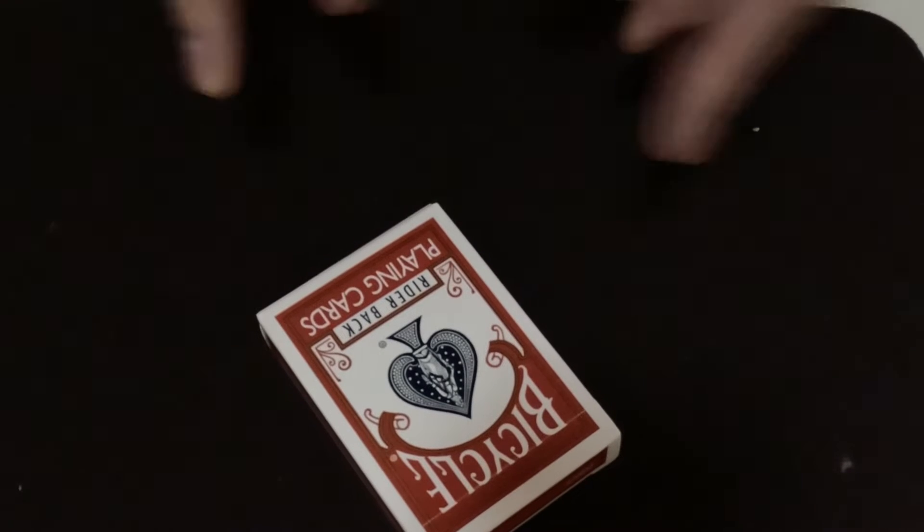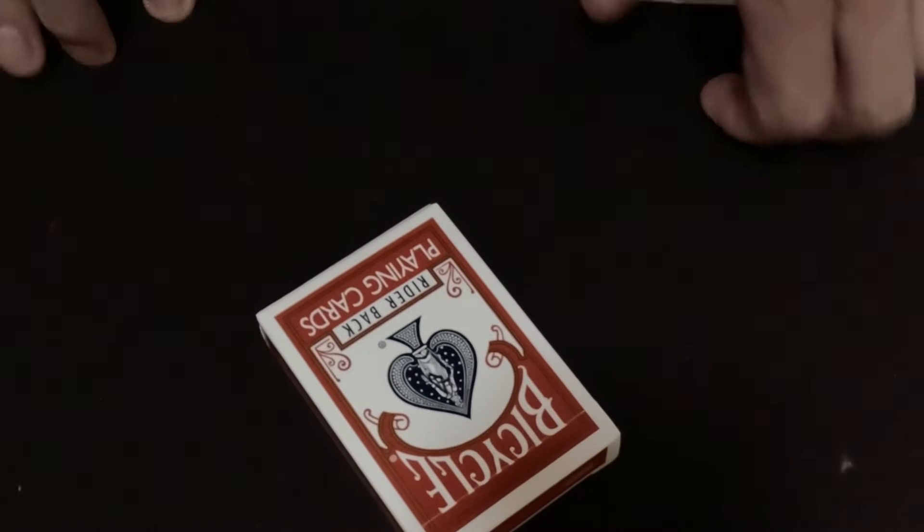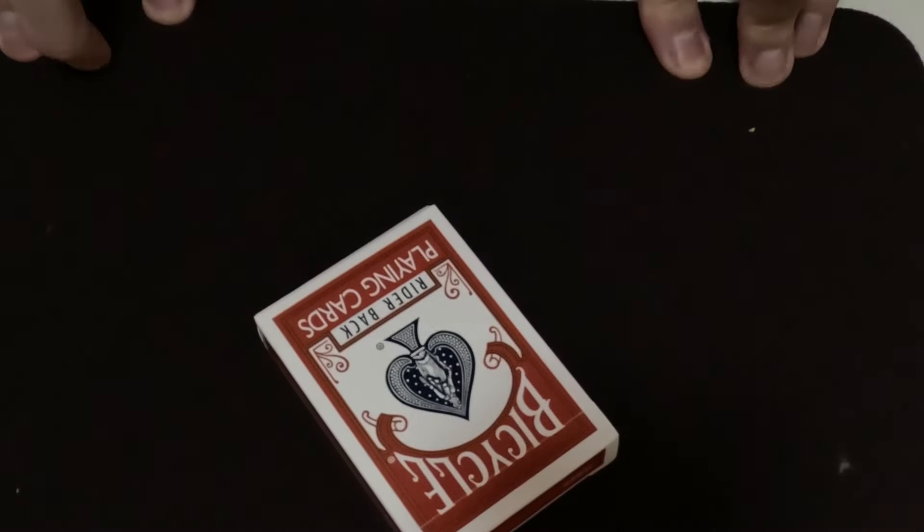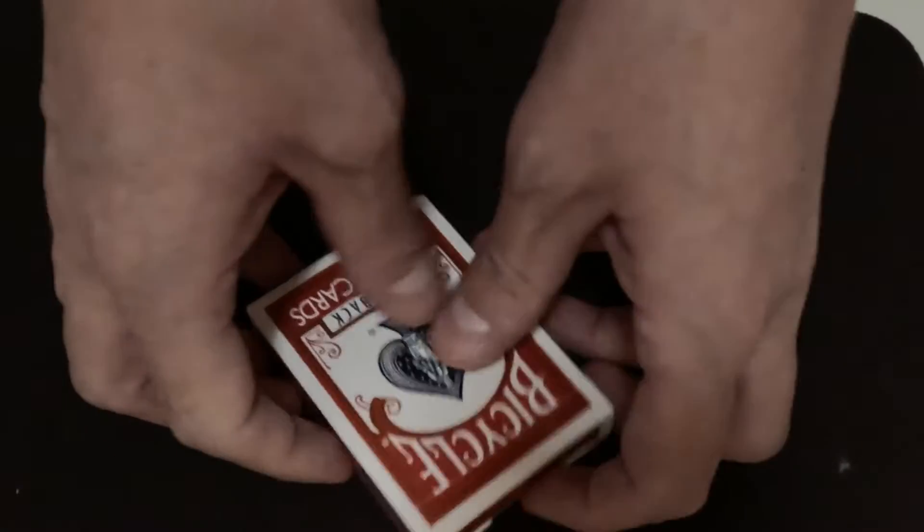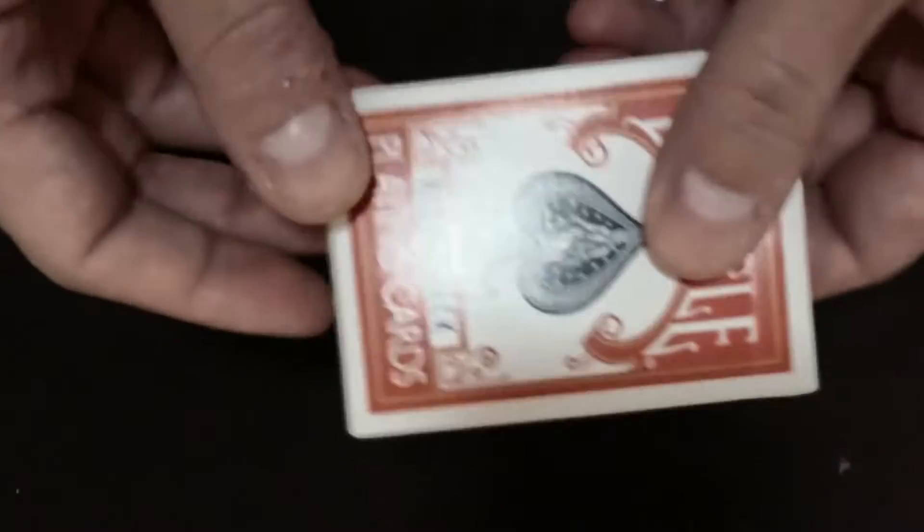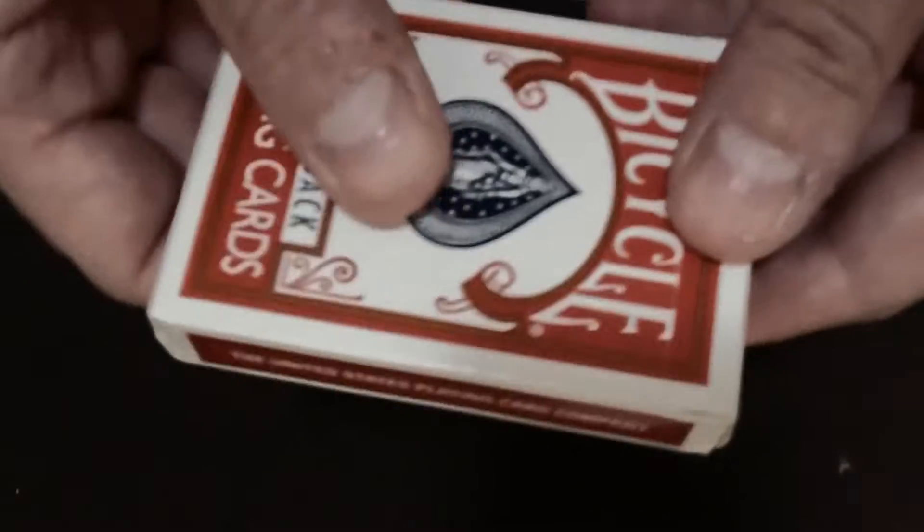For the purposes of this demonstration, we're just going to pretend there's an audience member. The audience member is asked to think of any card they want from a regular standard playing card deck. After thinking of the card, they tell the magician what card they were thinking of. So let's say they were thinking of the six of diamonds.